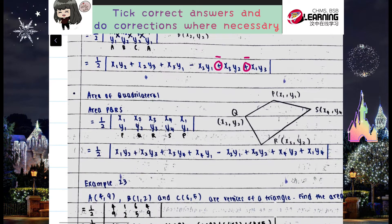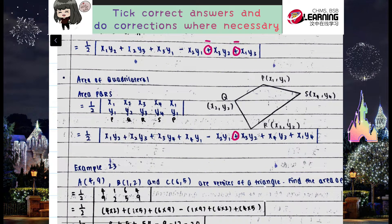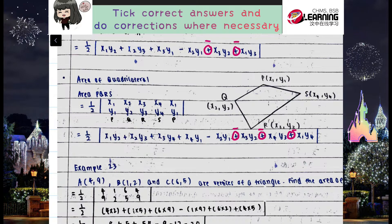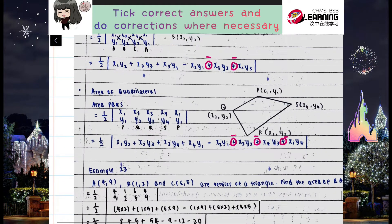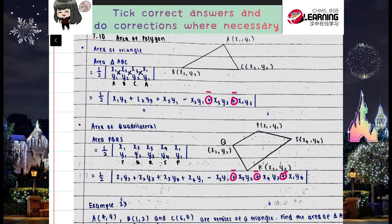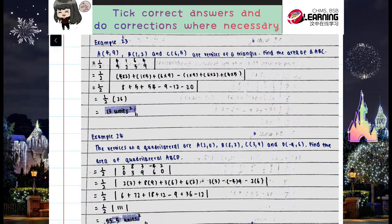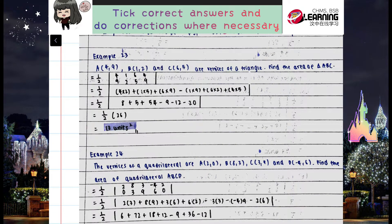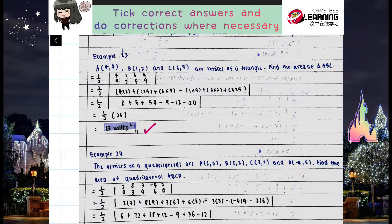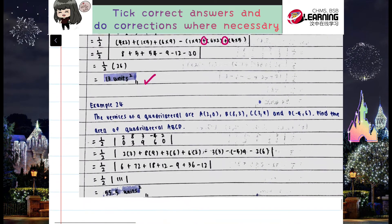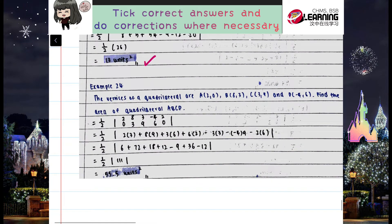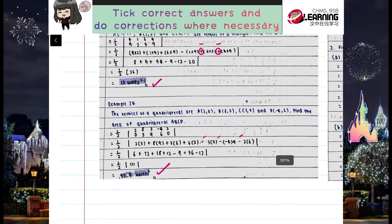The mistake is here — it's supposed to be a minus, not a plus. The quadrilateral formula also has the same issue; it's supposed to be a minus. It's not a minor mistake because if you follow the wrong formula your answer is wrong. For Example 23, please change that plus to a minus. Example 24 is correct at 55.5.